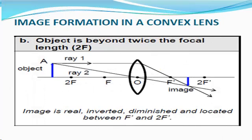When an object is beyond twice the focal length, the image is real, inverted, diminished, and located between F and 2F.